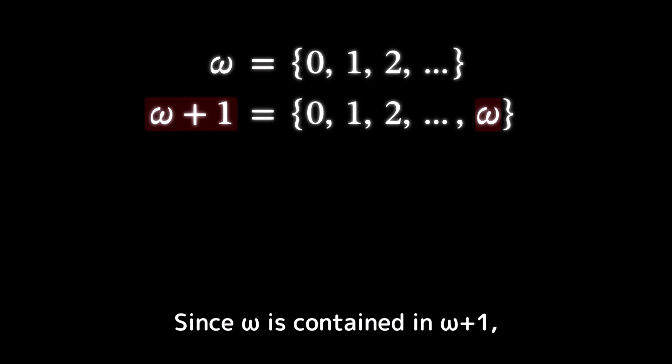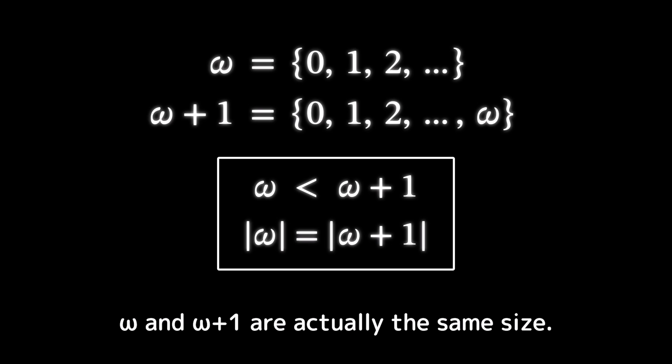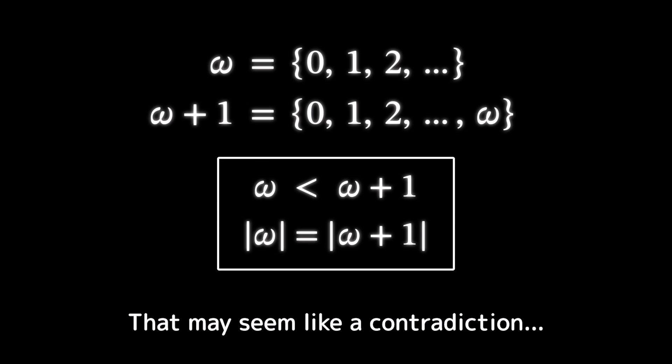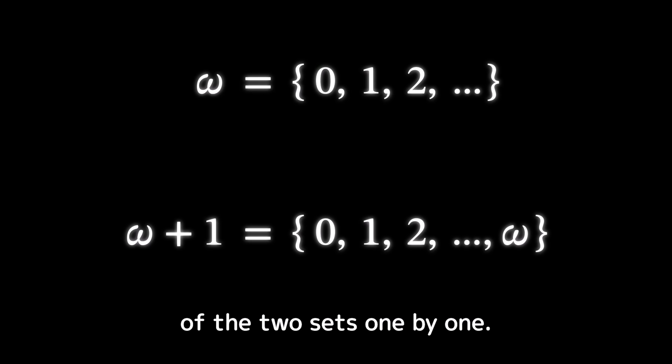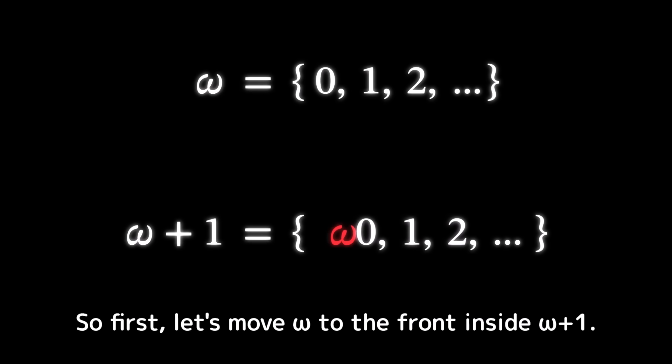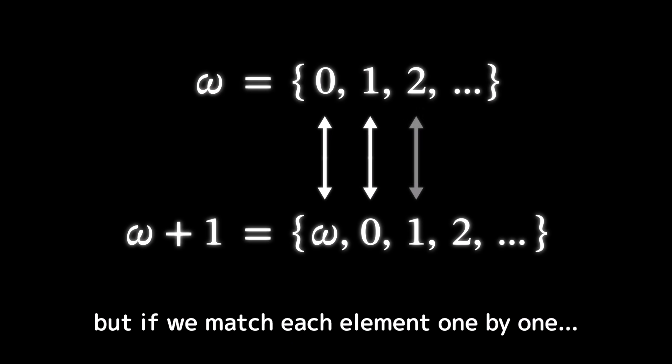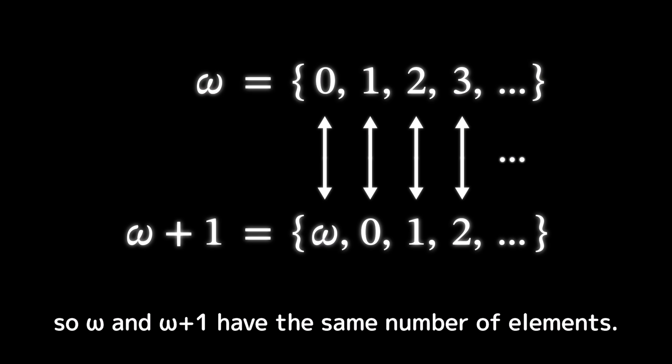Since omega is contained in omega plus one, we can say that omega is smaller than omega plus one. But here's something strange. Omega and omega plus one are actually the same size. In other words, they have the same number of elements. That may seem like a contradiction. To explain this, let's match the elements of the two sets one by one. So first, let's move omega to the front inside omega plus one. At first, omega plus one looks like it has more elements. But if we match each element one by one, that one extra element just gets absorbed into the endless structure of infinity.